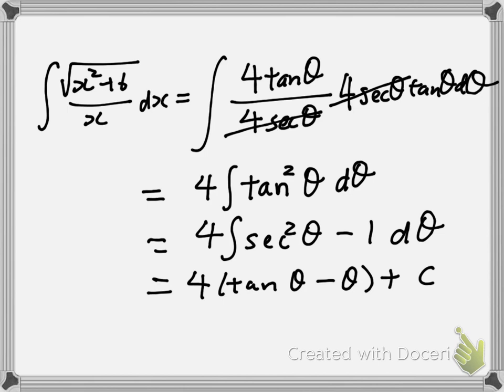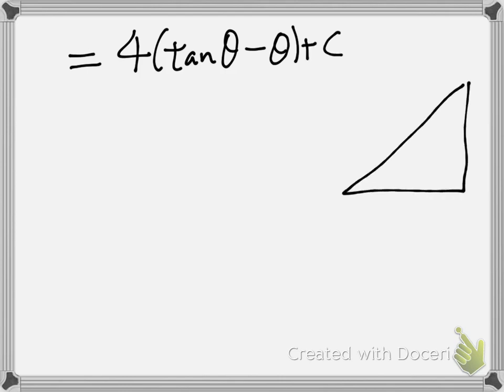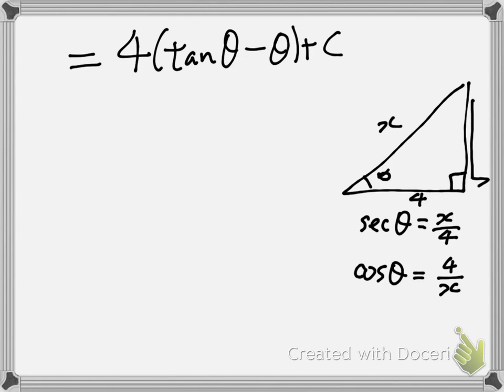In order to change theta back into x, we dig out the right triangle which we got from secant theta equals x over 4. If secant of theta is x over 4, cosine of theta is 4 over x. Knowing that cosine is adjacent over the hypotenuse, we can actually label the triangle with 4 and x on the adjacent and hypotenuse. Using Pythagoras theorem, we know what that is.